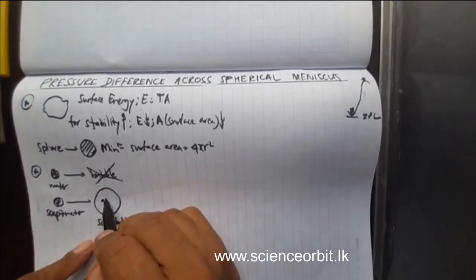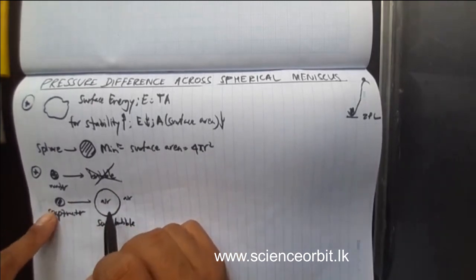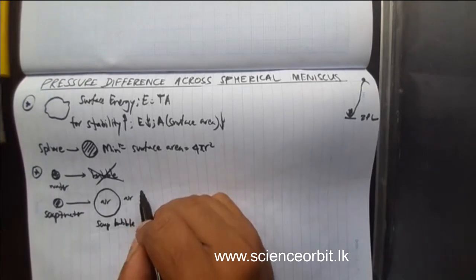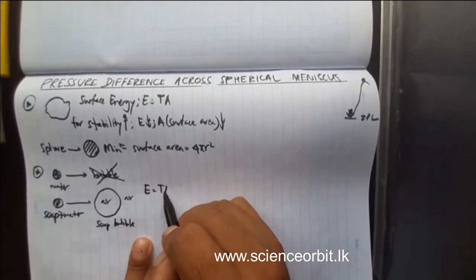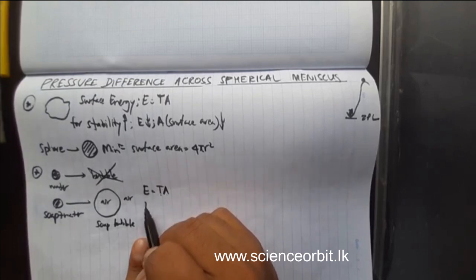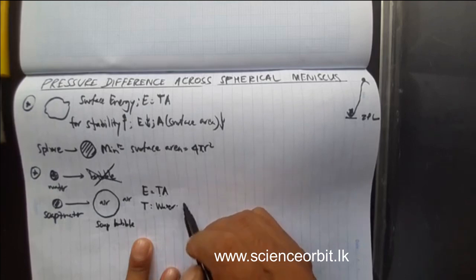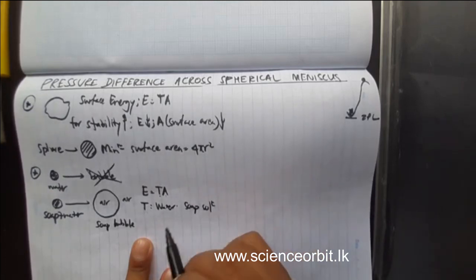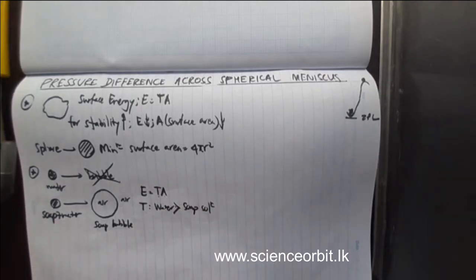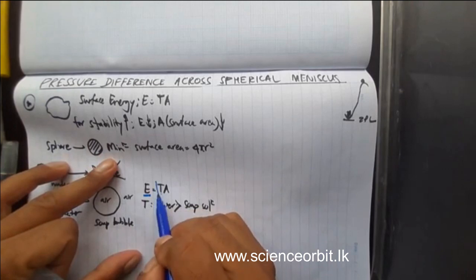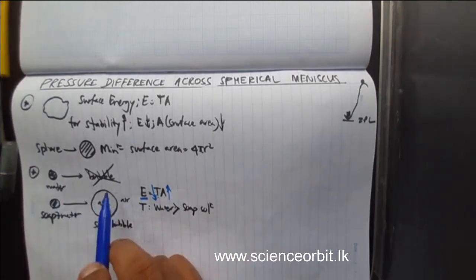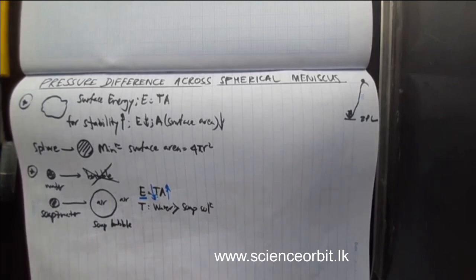You cannot do the same with plain water. The reason for this is also the surface energy. The equation for surface energy is E = T × A. When you compare the surface tension of water and soap solution, water has the higher surface tension, because we learnt that when you add an impurity like soap, the surface tension of water reduces. So when you reduce the surface tension, you can go for a higher surface area — that is why a soap bubble can be created, but with water you cannot create bubbles like that.